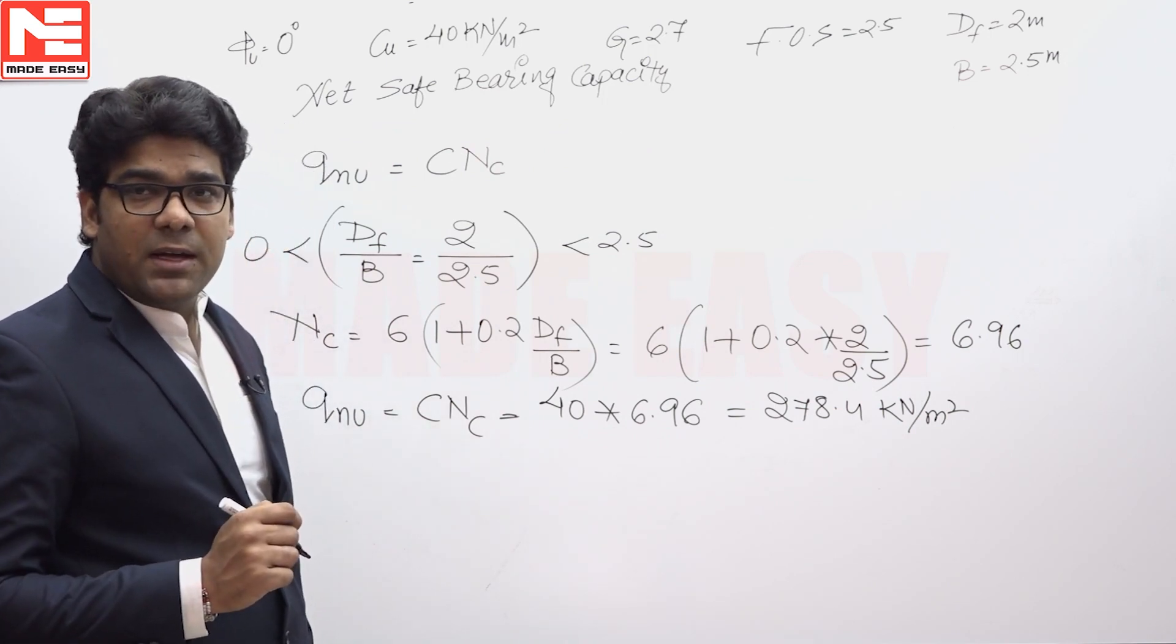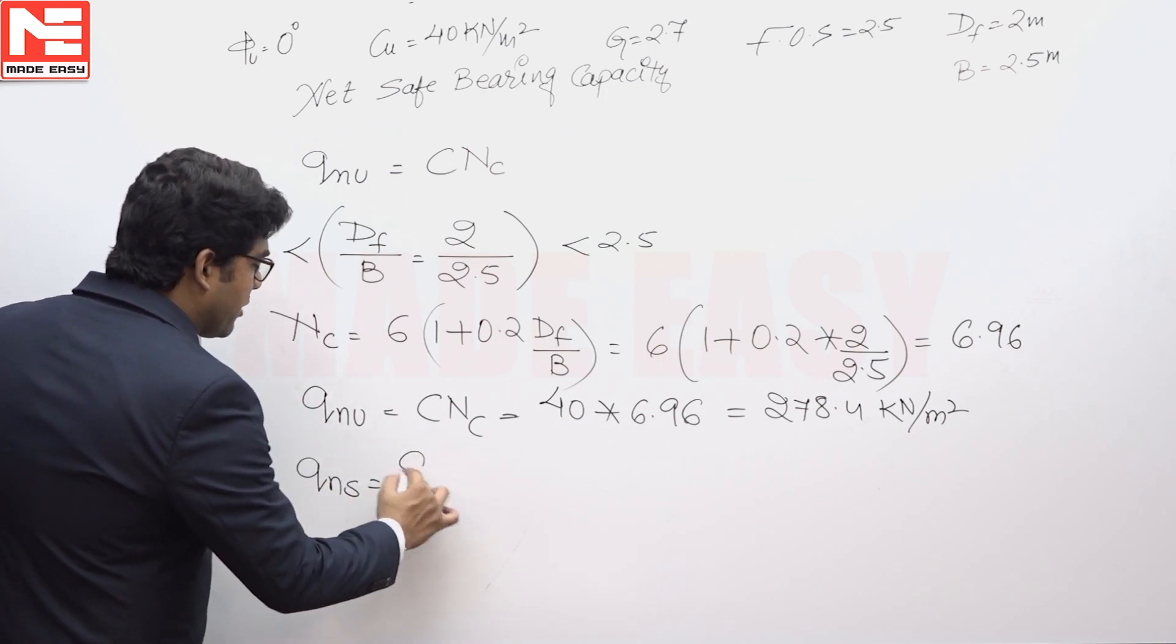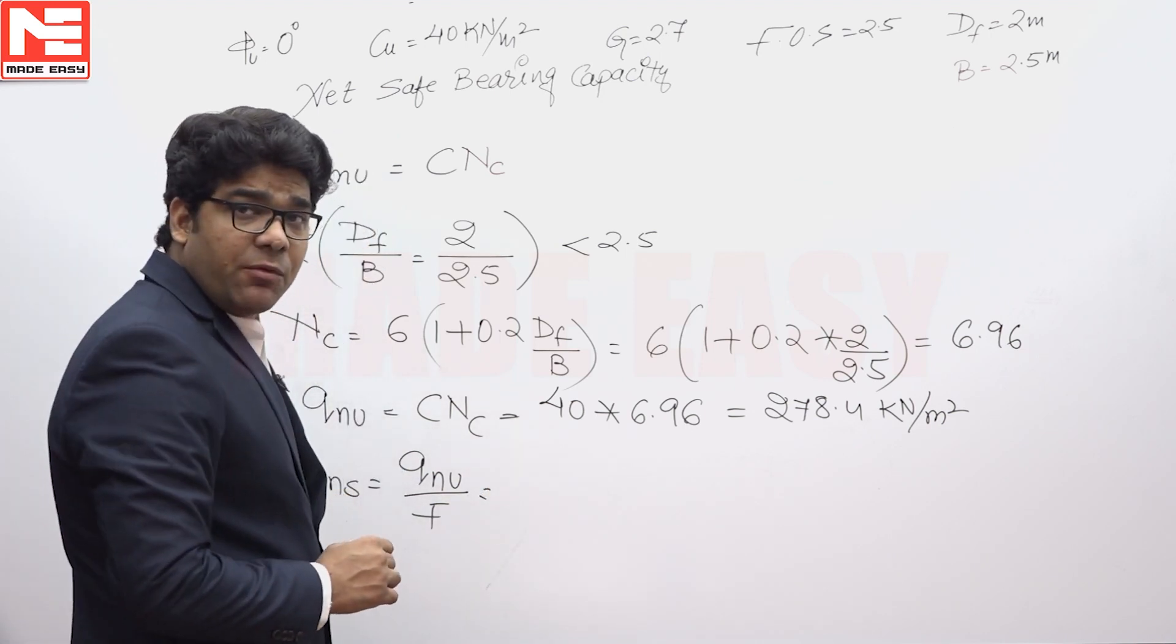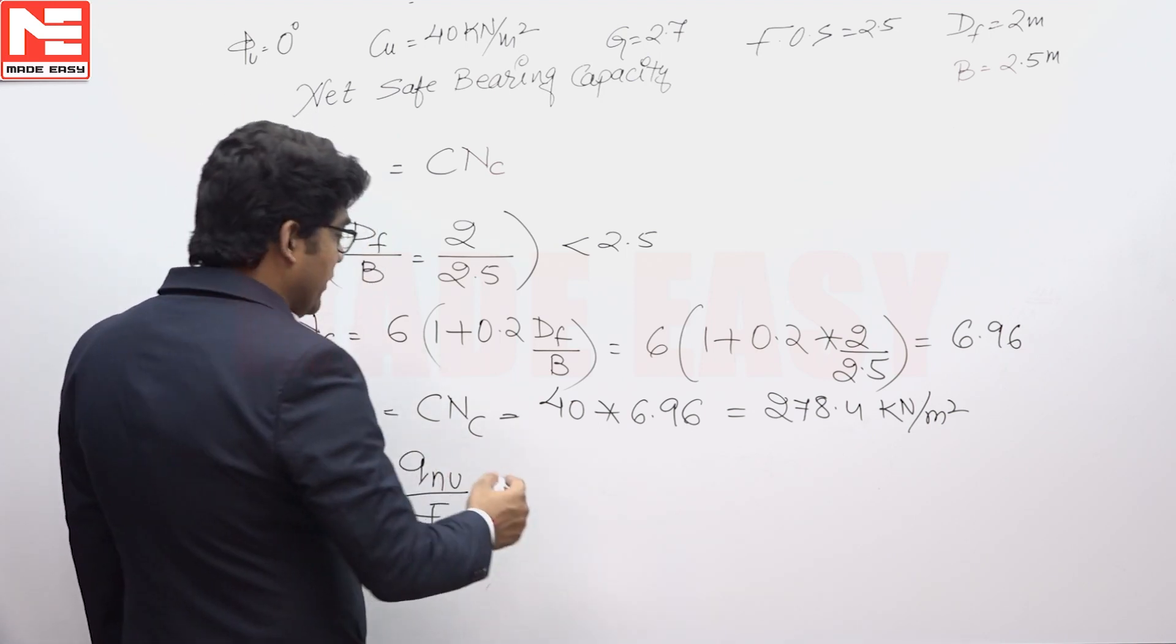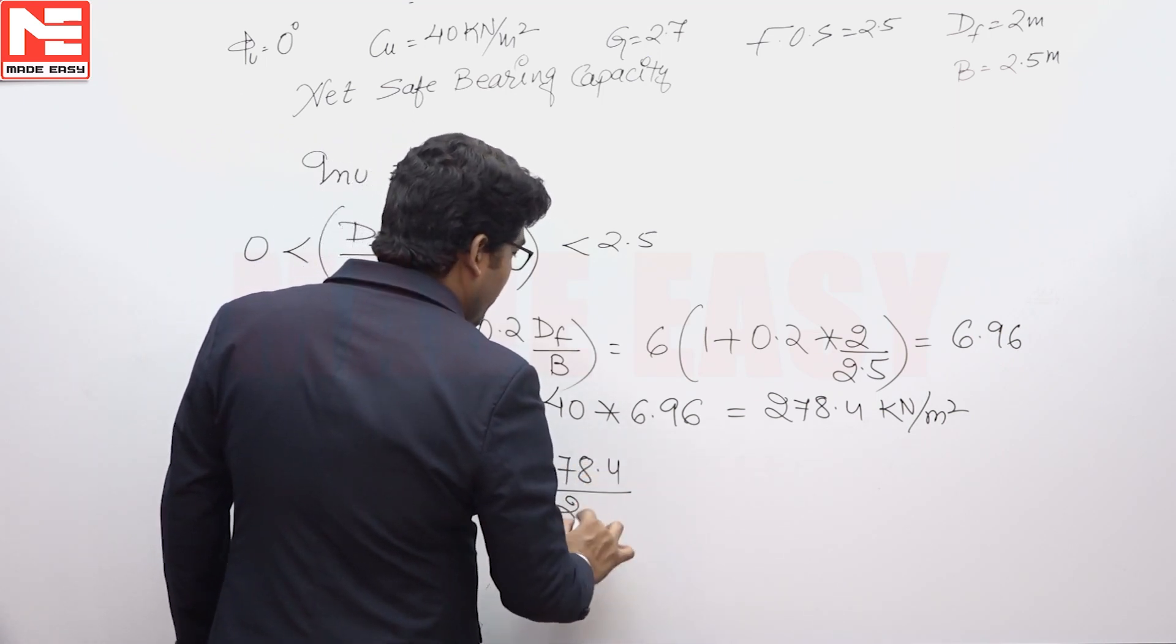But the question is asking about net safe bearing capacity. The net safe bearing capacity will be equivalent to QNU divided by factor of safety. Net ultimate we have already calculated, and factor of safety is 2.5, so the answer will be 278.4 divided by 2.5.